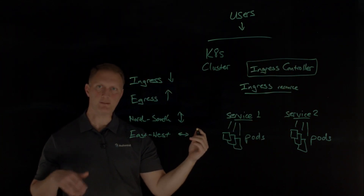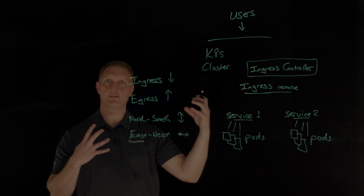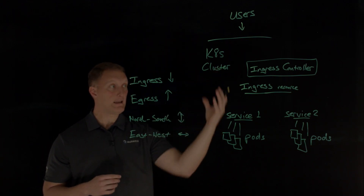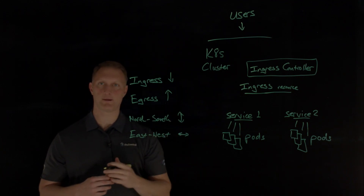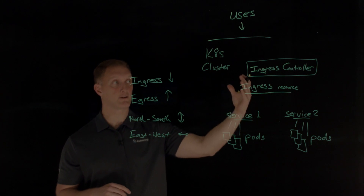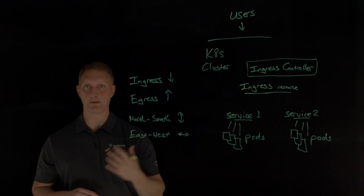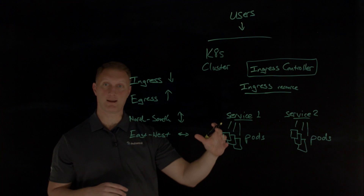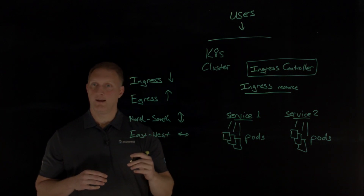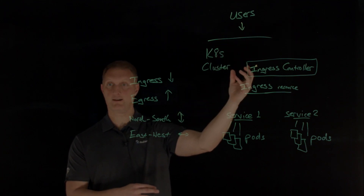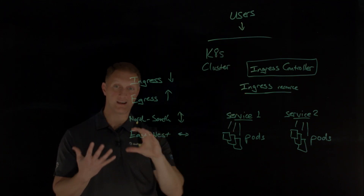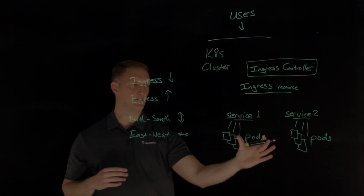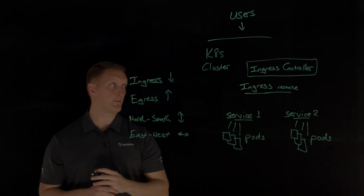The ingress controller is a specialized load balancer that manages layer four and layer seven ingress and egress traffic. It can be used to do a number of things. It provides monitoring and visibility — all of the ingress traffic that comes in, it can give you insight into issues that might be impacting your application. The ingress controller accepts the ingress traffic, potentially modifies it, shapes the traffic as needed, and then distributes it to the pods running inside the cluster.